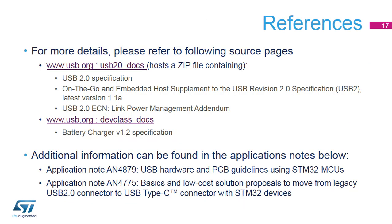For complete USB specification documents, please refer to usb.org. The USB 2.0 document homepage has a zip file containing the USB 2.0 and OTG 2.0 specifications and an ECN for LPM. The USB device class documents page has the battery charger specification. Additional information can also be found in the referenced application notes.